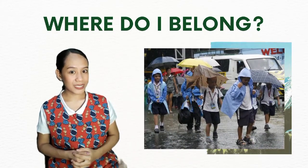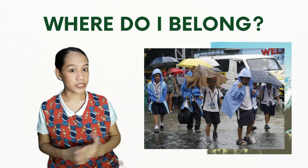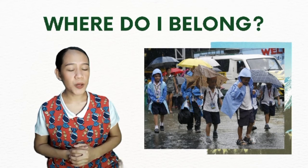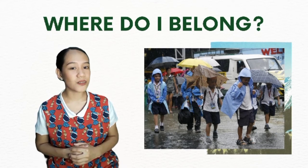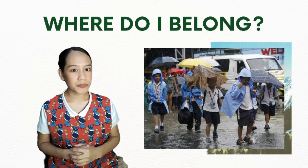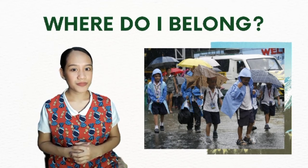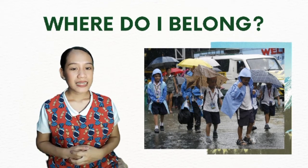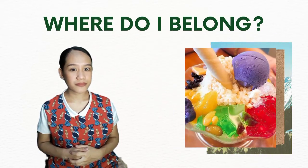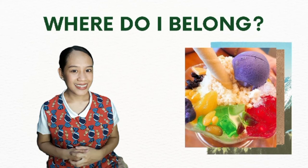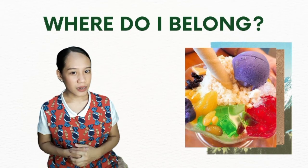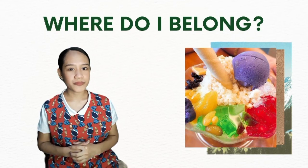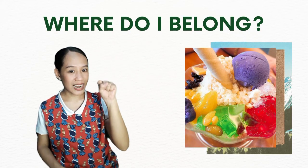For our first picture, can you please describe what is being shown? There are some pupils wearing raincoats and holding umbrellas — this belongs to the rainy season. For the next picture, it's halo-halo. People usually want to eat halo-halo during dry season. Correct!